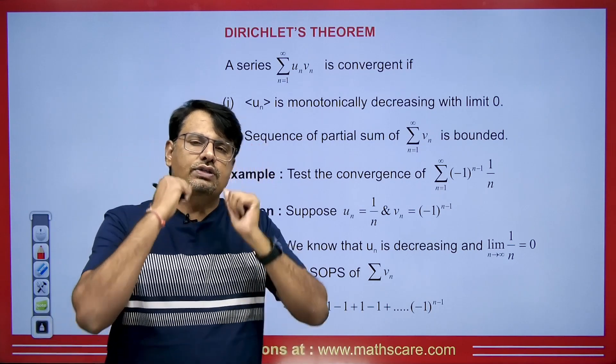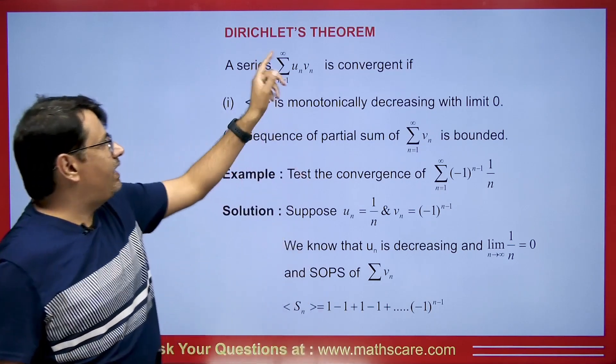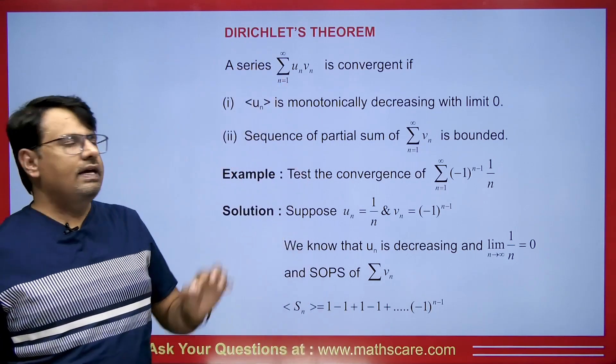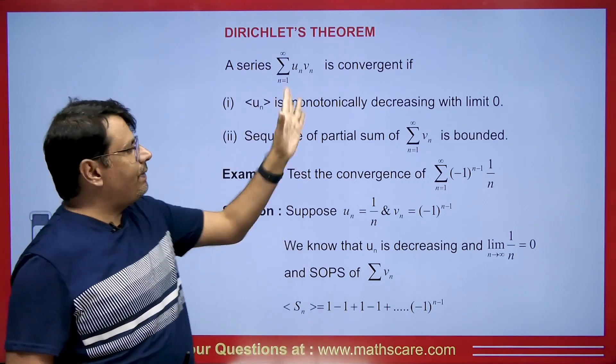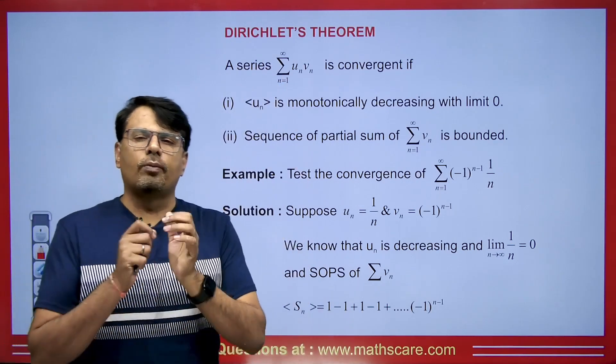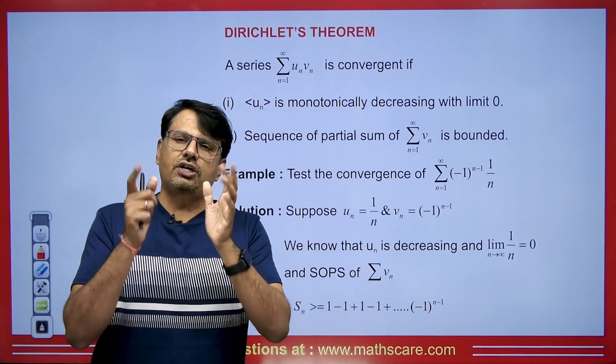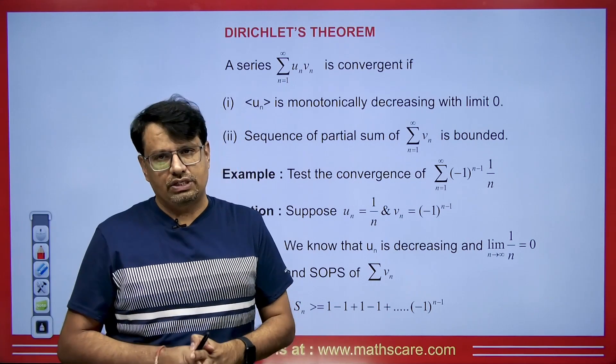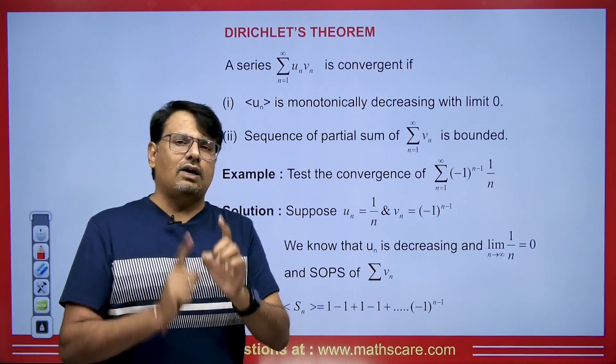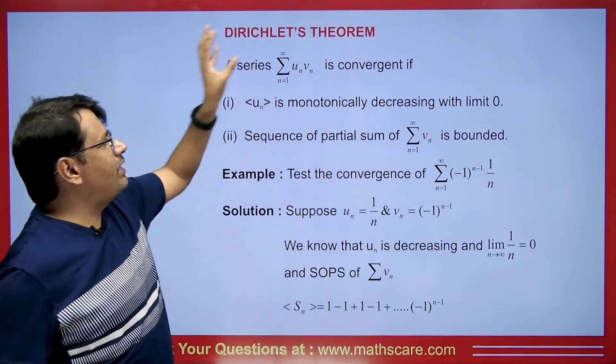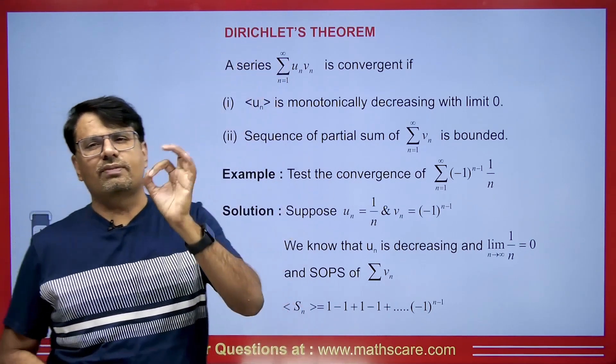And what about the second series? The second series is the vn series. We should be getting its partial sums (SOPS) as bounded. If this happens, then this series will be called convergent.